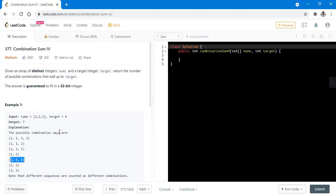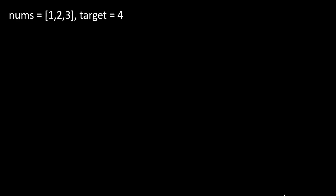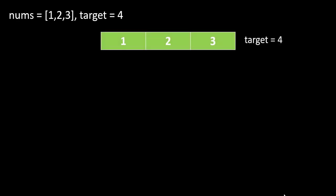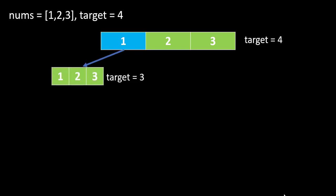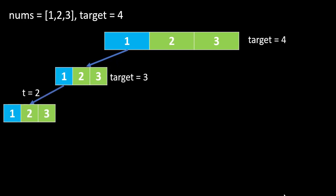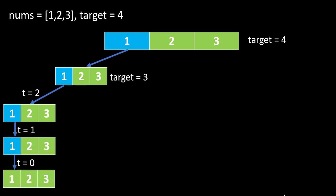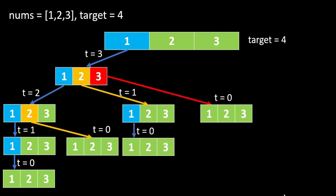Let's try to understand this problem with the help of an example. We are given three numbers and the target is four. If we select number one first, the target comes down to three and since we can use all numbers as many times as we want, three numbers still remain available. We again choose one, the target goes down to two, and we continue till the target is zero. When the target is zero we have achieved the initial target, so we backtrack. Backtracking from that point, at the third last level we can also take two, making the target zero — that is one more combination.